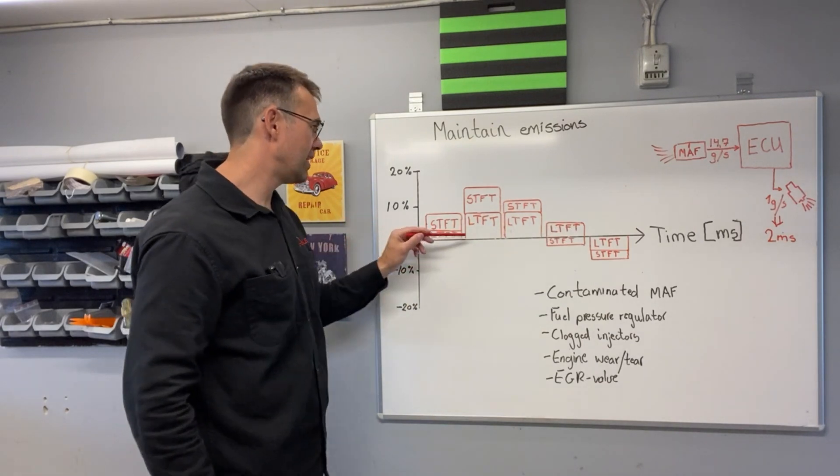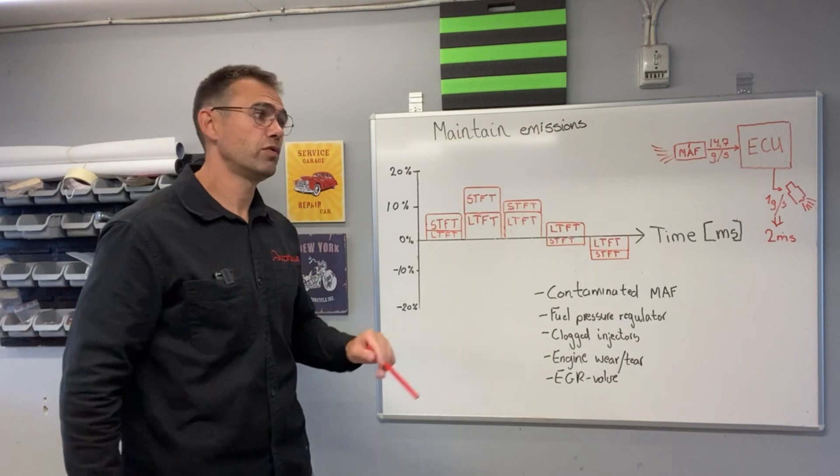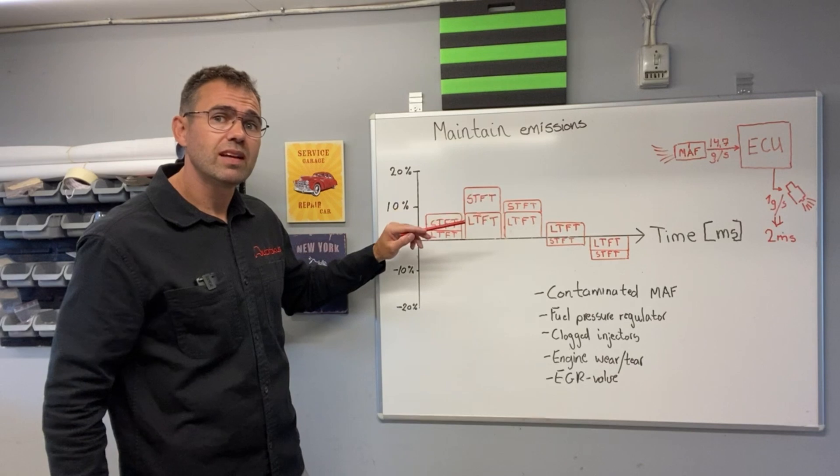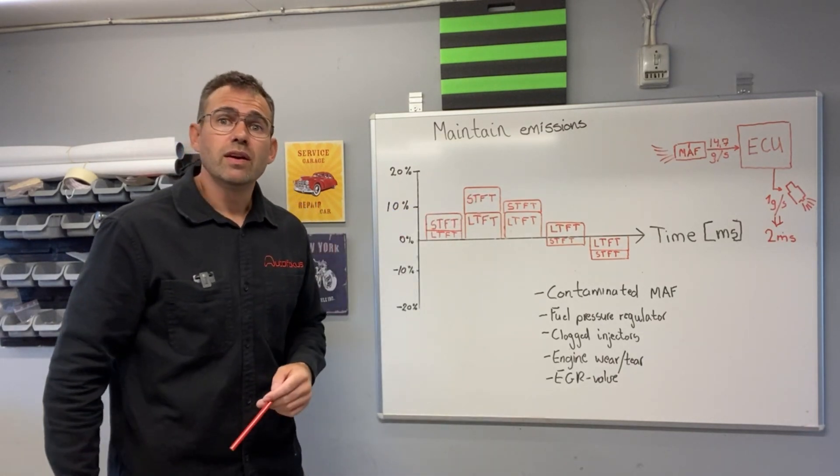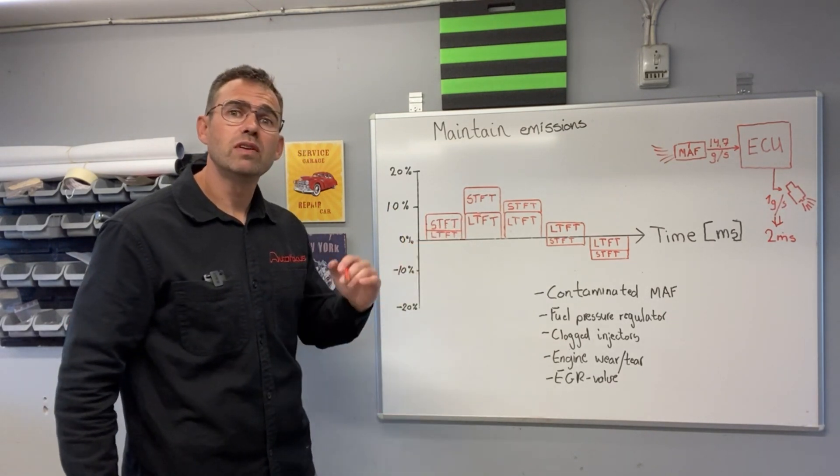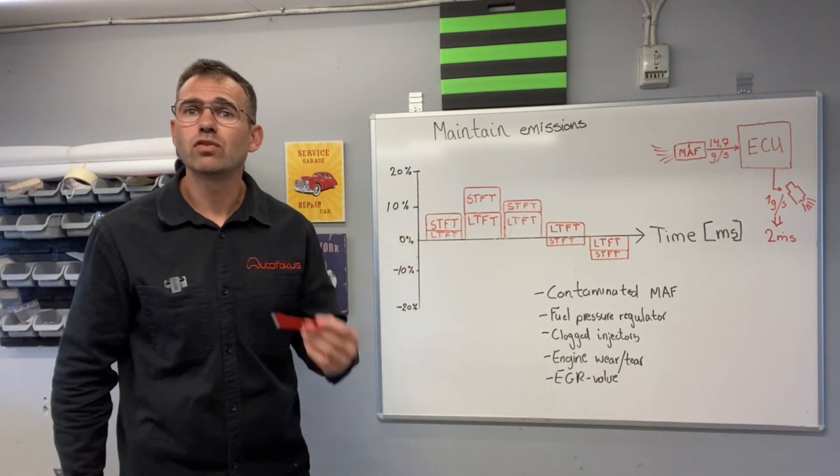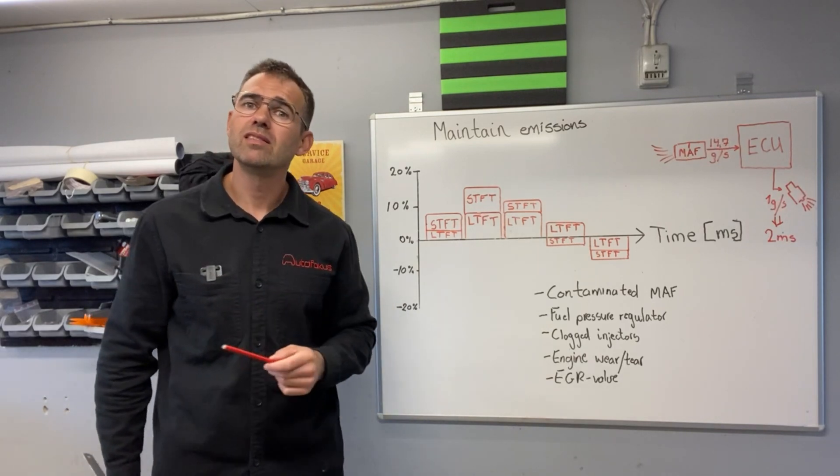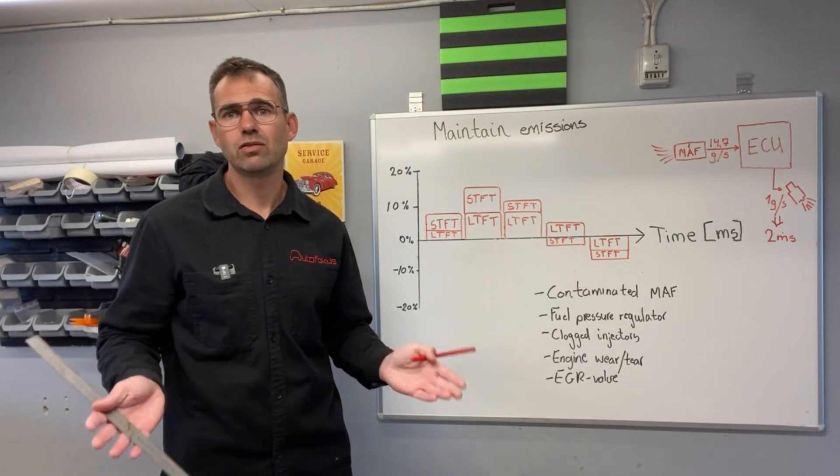We could actually imagine that this contaminated MAF sensor gets even more contaminated, so the mixture is lean and the fuel trim will then try to compensate on that. The short term is going to ensure that more fuel is injected and over time the long term fuel trim will move accordingly. However, the long term fuel trim is now adding so much fuel, 10% more than intended, then the check engine light will come on, basically saying to the driver, hey, something is wrong here, you need to take it to a workshop.